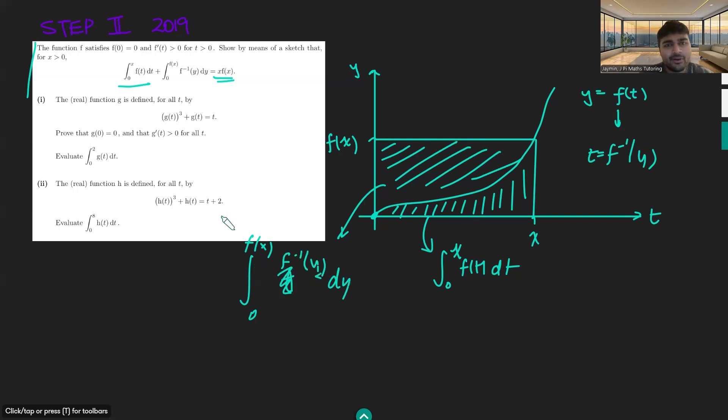And so this thing here is just f inverse of y dy. And now, you may ask, well, how do we know that an inverse exists? Well, that's because this function here is increasing. So since it's increasing, we know that an inverse exists because it's one to one. Okay, great. So that proves this equation here. Now, let's move on to part one.